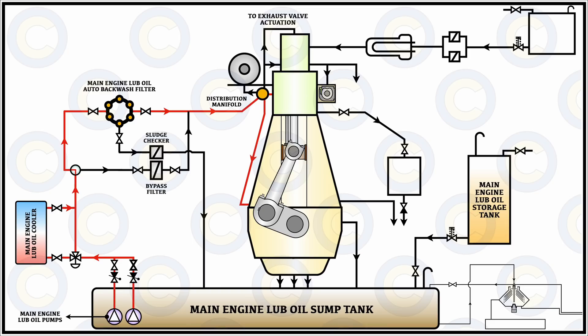After lubricating the crosshead bearing, some part of the oil will also move towards the downside — that is the bottom end bearing or crank pin bearing. The drilled passage in the con rod will allow the oil to pass towards the lower side and thereby lubricate the bottom end bearing. For the main bearing, the line passing from the common manifold will be completely different, because the quantity, flow, and pressure required for the lubrication of the main bearing is very important.